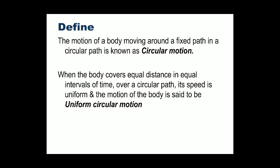When the body covers equal distance in equal interval of time over a circular path, its speed is uniform. As we have learned in our earlier classes, when equal distances in equal interval of time is being covered, that is known as uniform. So when an object covers equal distance in equal interval of time over a circular path, its speed is uniform and the motion is said to be uniform circular motion.